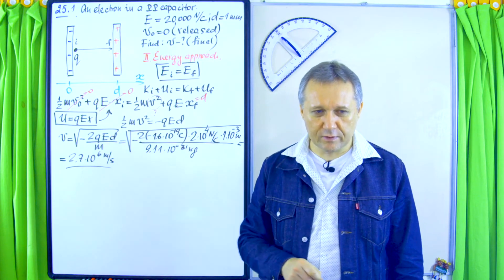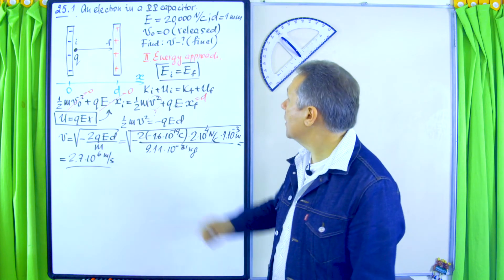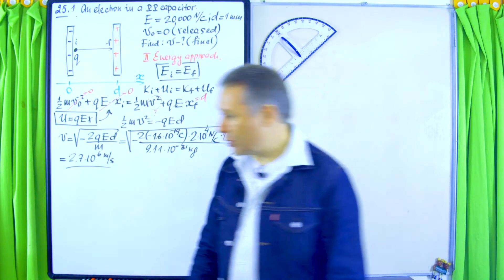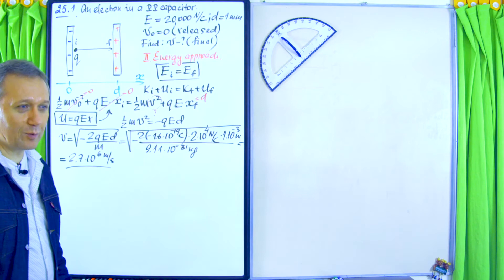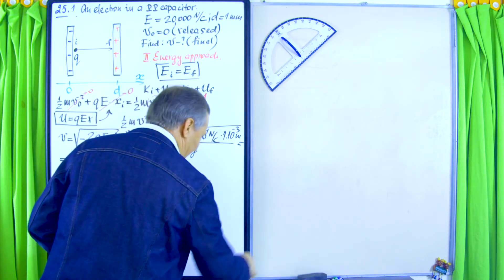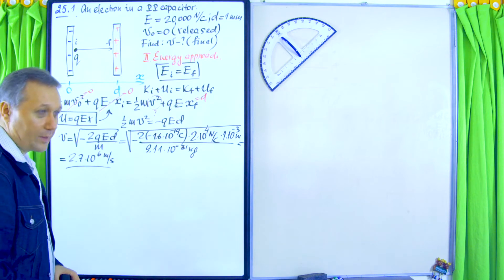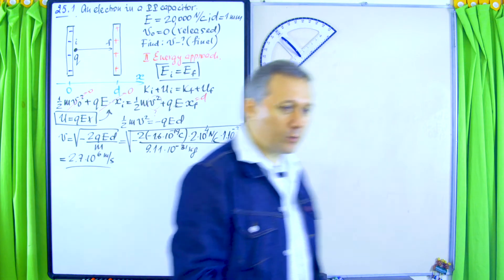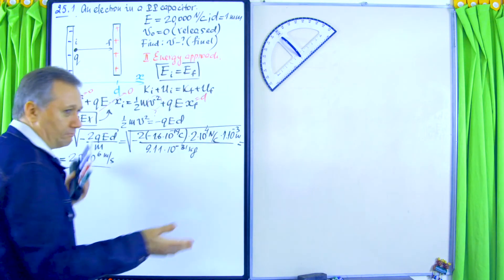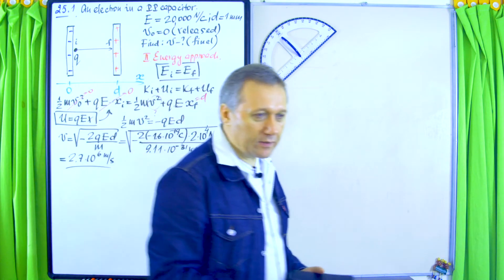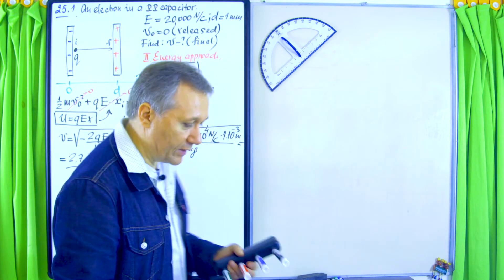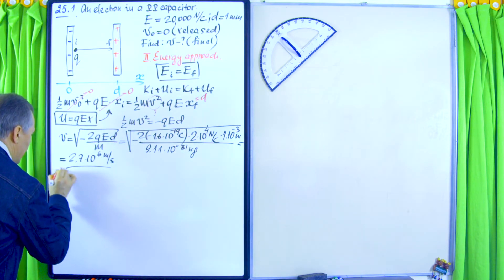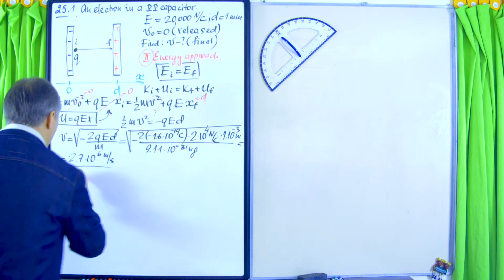That's 2,700 kilometers per second — from zero to 2,700 kilometers per second within one millimeter. It's quite an acceleration, but it's normal for the world of elementary particles. For our everyday world it's something difficult to imagine. So that's the energy approach — the new one — based on scalar quantities. Now let's juxtapose it and also solve the same problem using the force approach, which we developed at the very beginning of the semester.